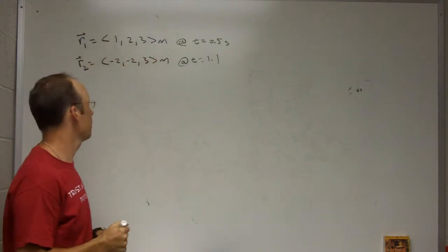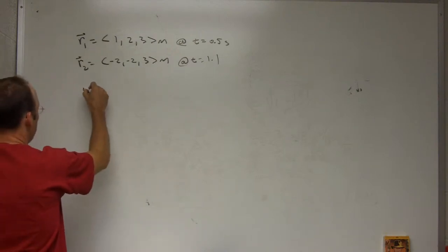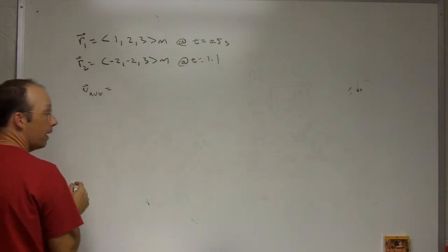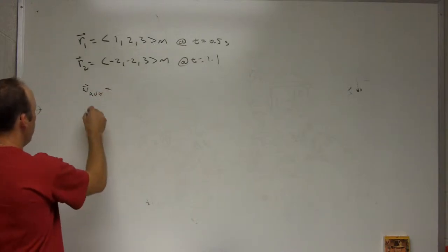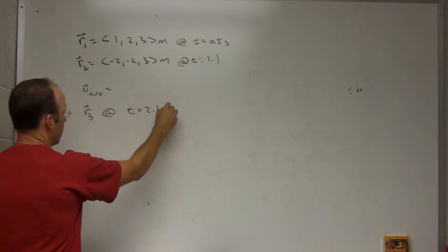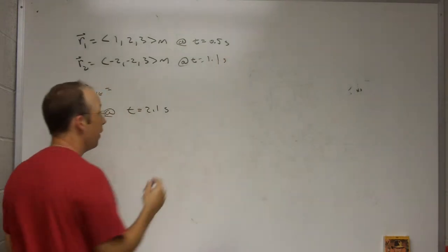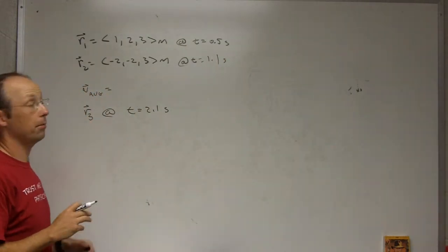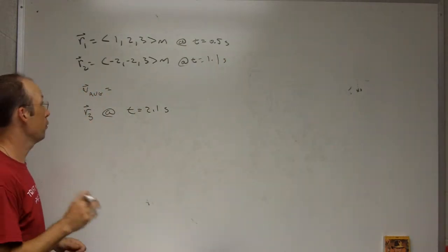So first, let's do two things. Let's find the average velocity. And second, let's find where it would be at position 3 at t equals 2.1 seconds, if we assume that it keeps up with the same constant velocity. So two parts.